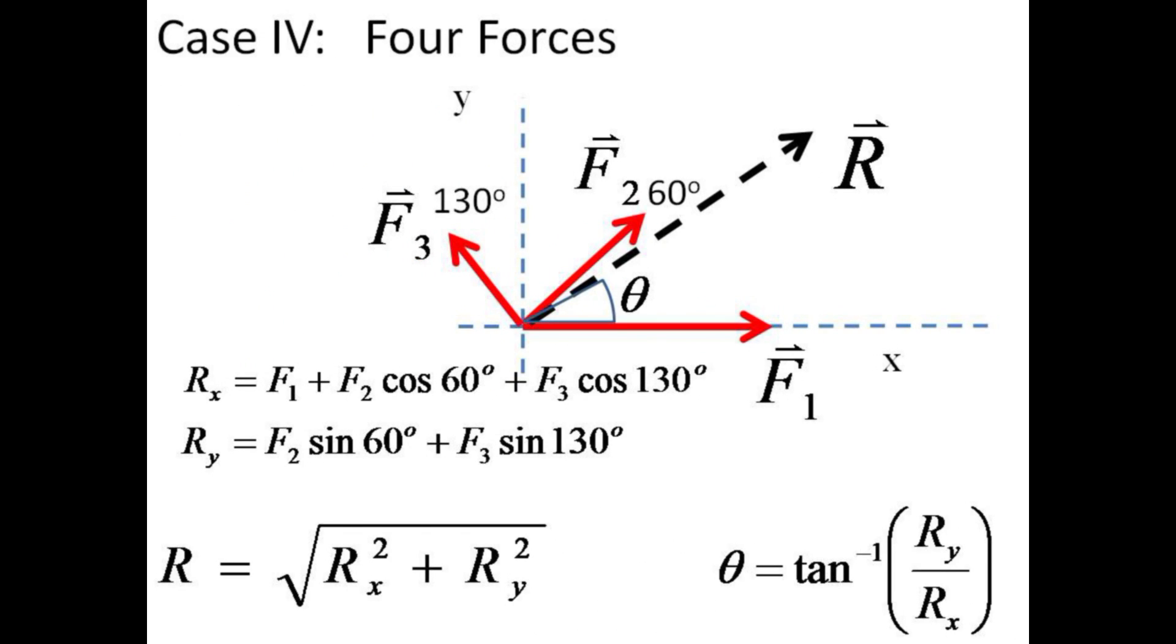Combining three forces into a resultant is not much more difficult. The x component of R is found by adding the magnitudes of each force times the cosine of its particular angle, and the y component of R is obtained by adding the magnitudes of each force times the sine of each angle.